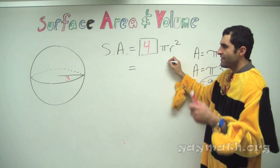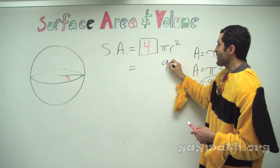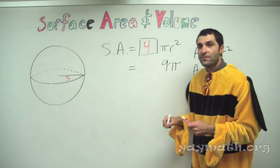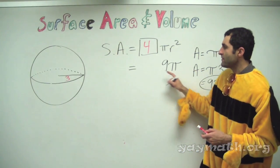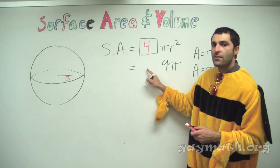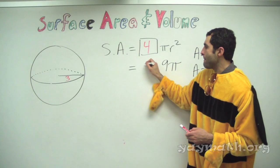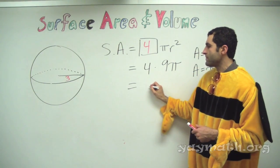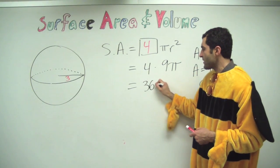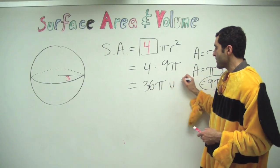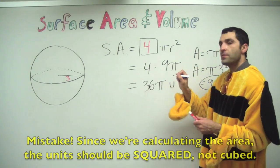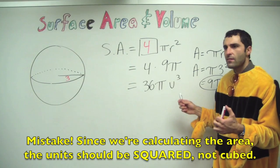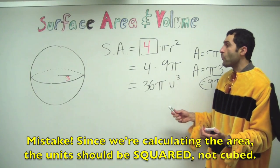What's the total surface area of this sphere? It's nine pi times four, which makes 36 pi units squared. Basically four circles make the area of the entire face.